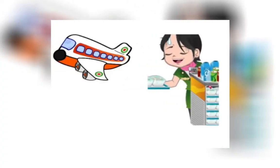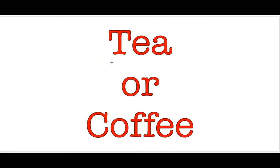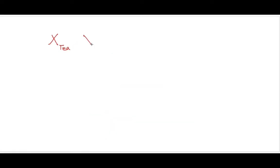Let's say you're on a flight and an air hostess asks which do you prefer: tea or coffee, and you say either. This means that tea and coffee are substitutes for you — given the choice between a cup of tea or a cup of coffee you will be indifferent. So if I give you one unit of tea and zero coffee you will be happy, or zero tea and one coffee — again happy. They kind of sum up to one and it doesn't matter which one is one and which one is zero.